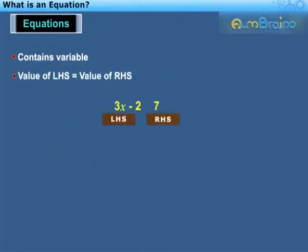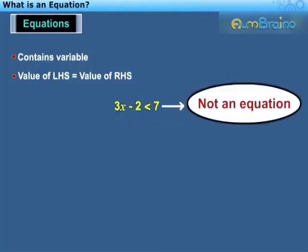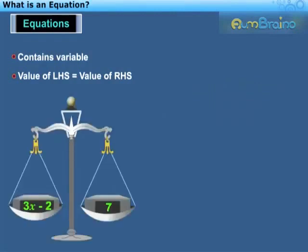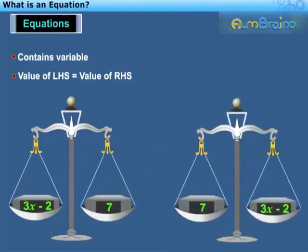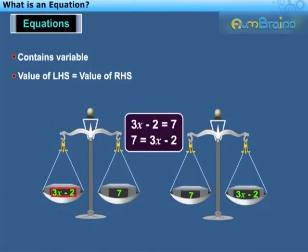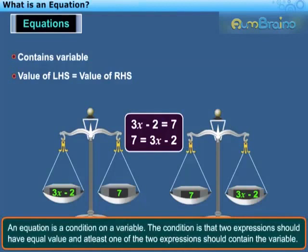The equality sign shows that the value of LHS is equal to the value of RHS. If there is any other sign between LHS and RHS — for example, greater than or less than — then it is not an equation. An equation can be represented by a weighing balance with equal weights on both its pans. An equation remains the same even if the expressions on the left and the right are interchanged; that is, 3x minus 2 is equal to 7 is the same as 7 is equal to 3x minus 2. Hence we can say that an equation is a condition on a variable: the condition is that two expressions should have equal value, and at least one of the two expressions should contain the variable.